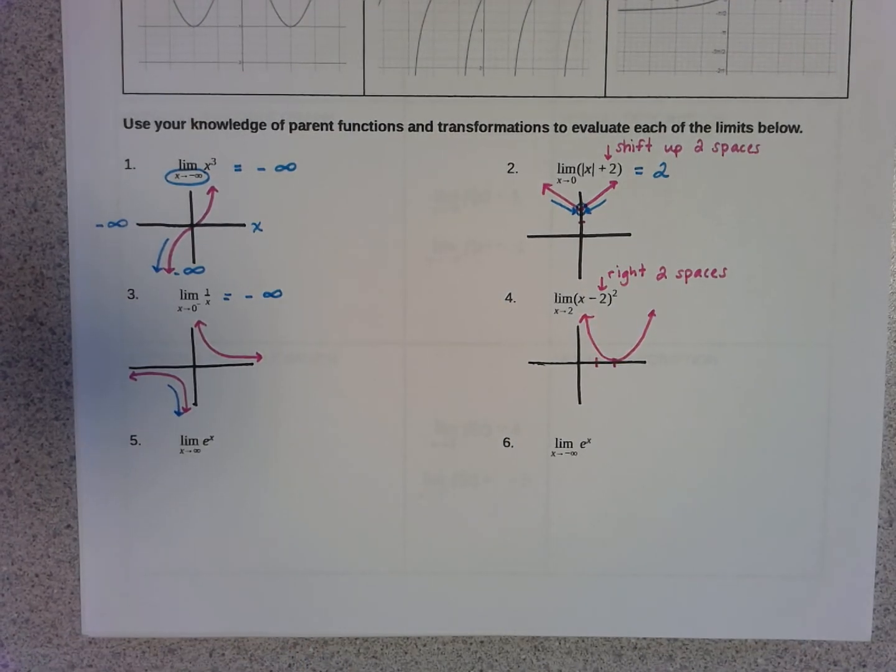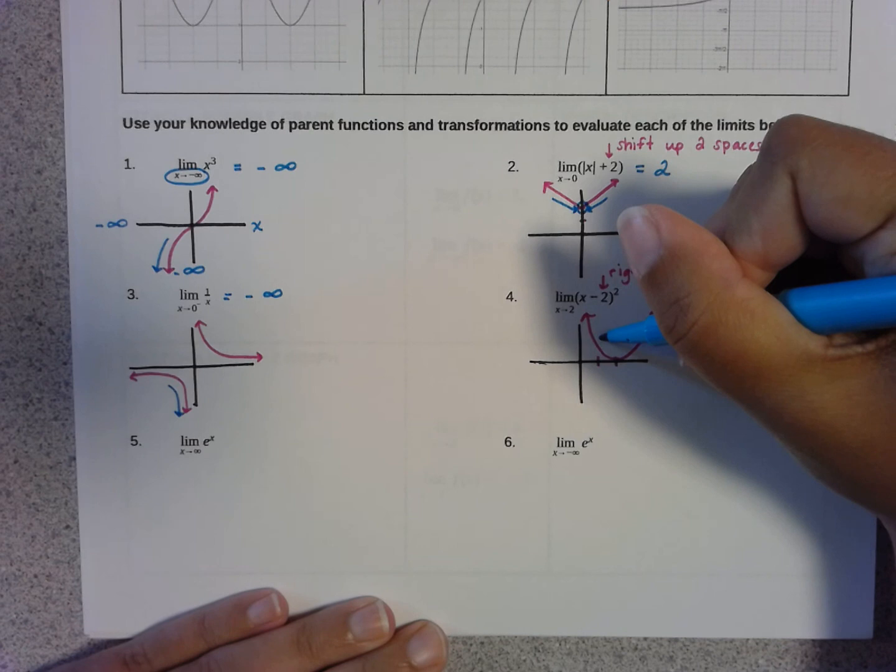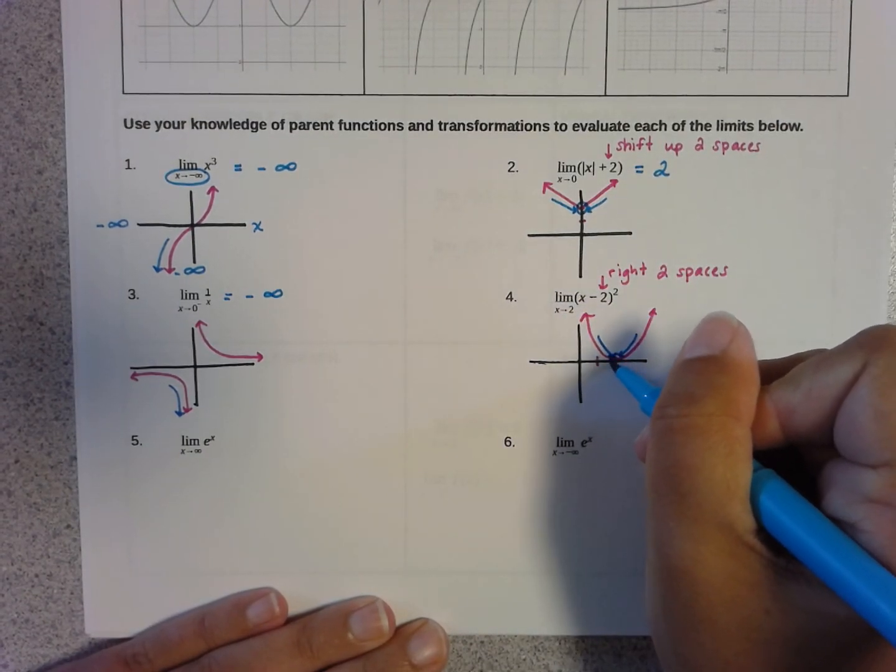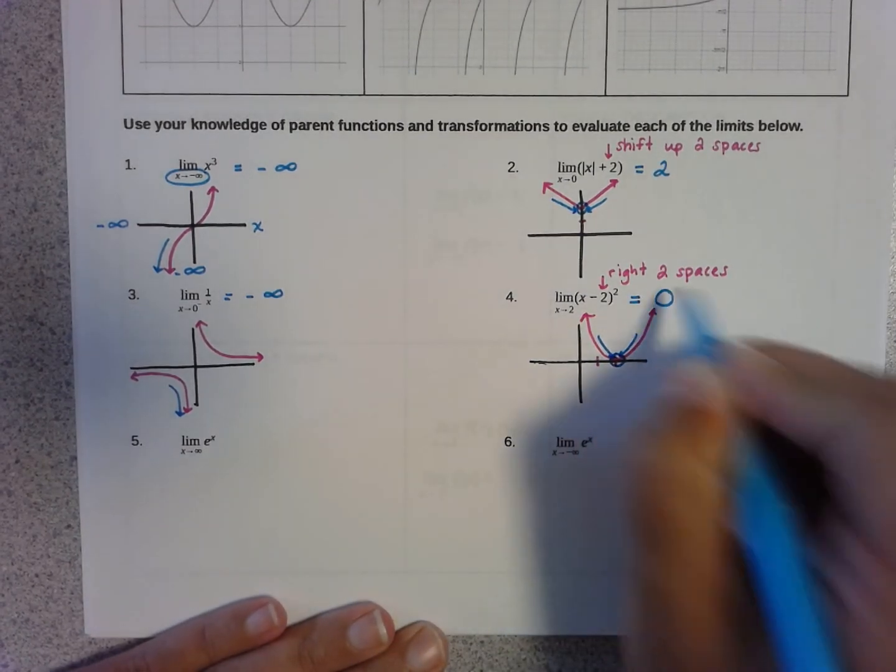Now again, this is a two-sided limit because there is no little plus or little minus in the notation. So if I approach the two from the left or from the right, both sides are approaching this point on the graph, which has a y value of zero.